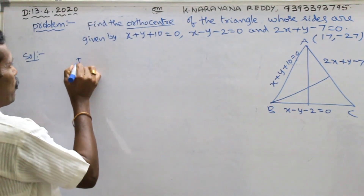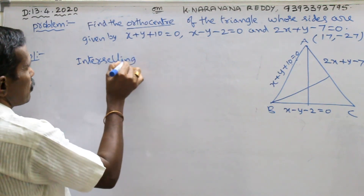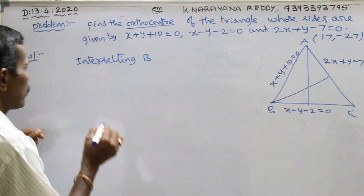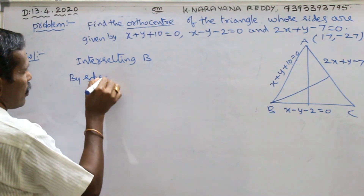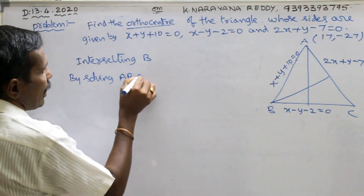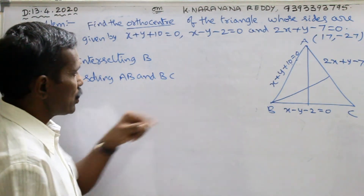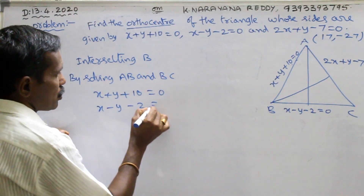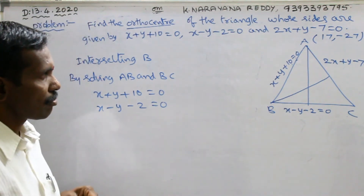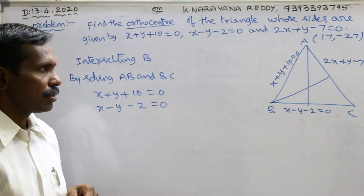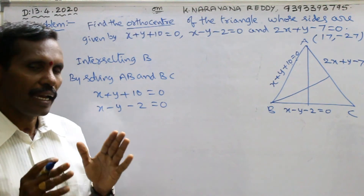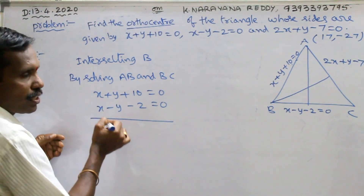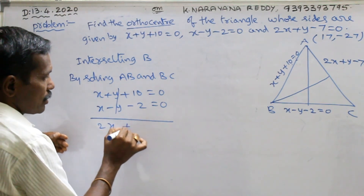Now find point B. Intersecting point B is found by solving sides AB and BC. Solve x plus y plus 10 equals to 0 and x minus y minus 2 equals to 0. Since the y coefficients have opposite signs, I am adding the two equations. Adding gives 2x plus 10 minus 2 equals to 8.